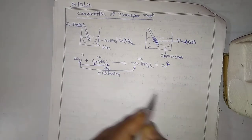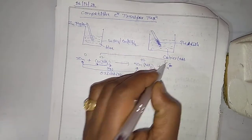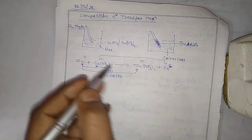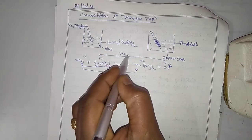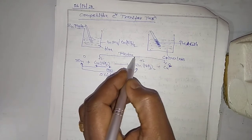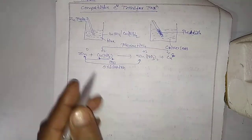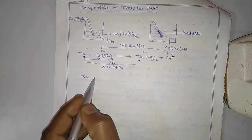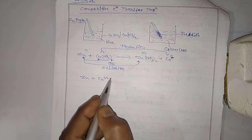When the electron is gained, the condition is reduction. You can see the shortcut: Zn plus Cu²⁺.